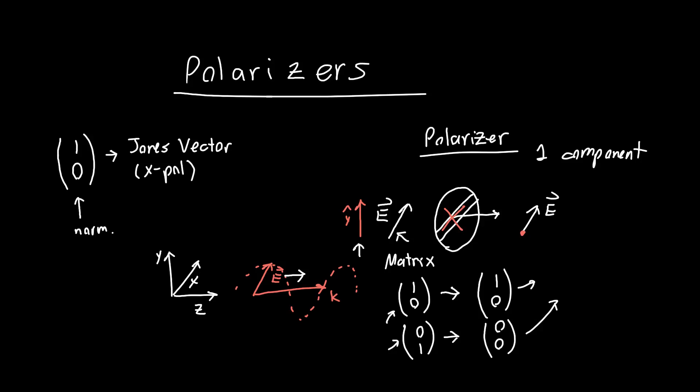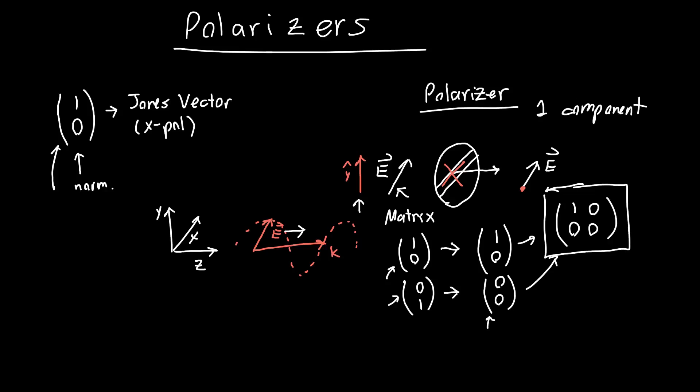Since we know how our unit vectors respond to our polarizer, we can use these two to make a matrix. The columns of the matrix are just the response to the unit vectors. So our polarizer matrix is just [[1,0],[0,0]].